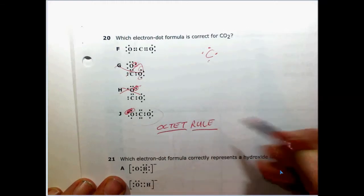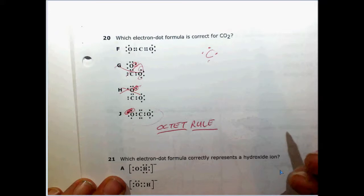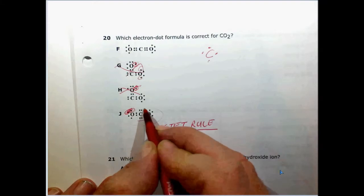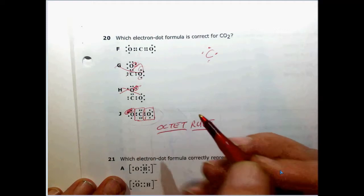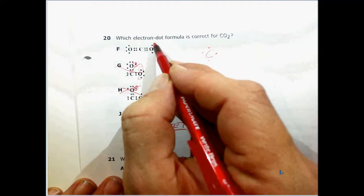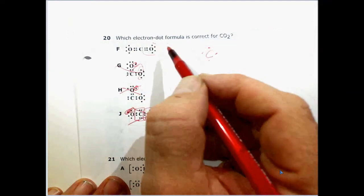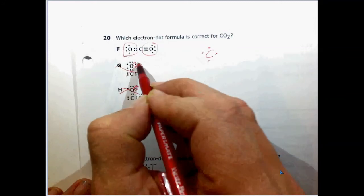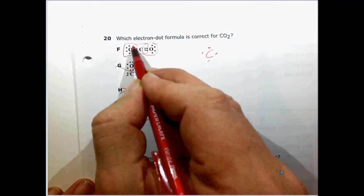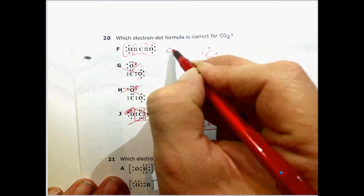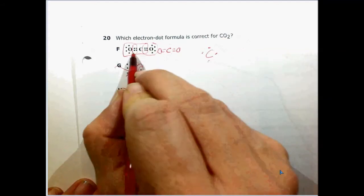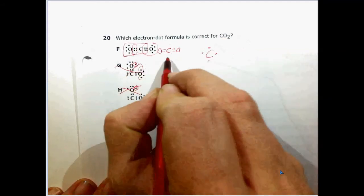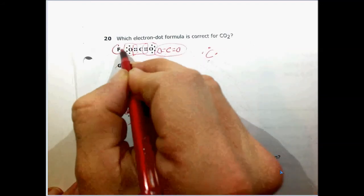The octet rule says that every atom is going to want to have 8 electrons surrounding it. If we look at carbon over here, it thinks that it has 8, but oxygen only thinks that it has 6, so this can't be correct. Must be this one. This oxygen thinks that it has 8, this oxygen thinks that it has 8, and carbon here also thinks that it has 8. These two pair of dots here and here represent a double bond. This is the correct answer.